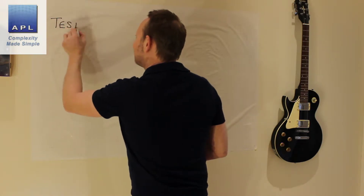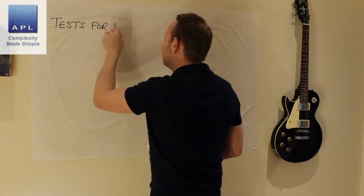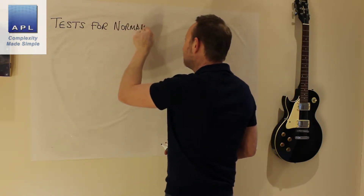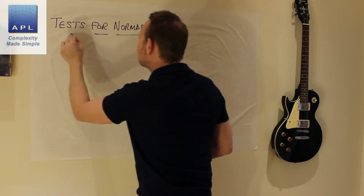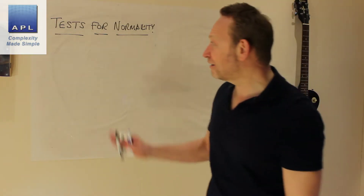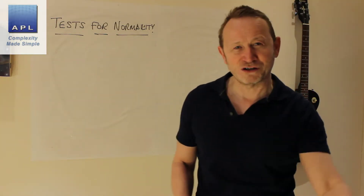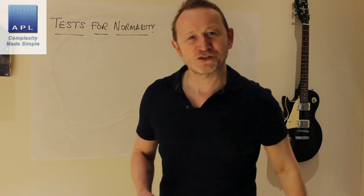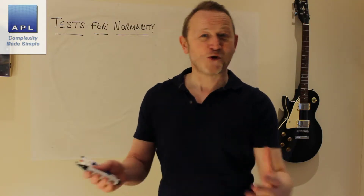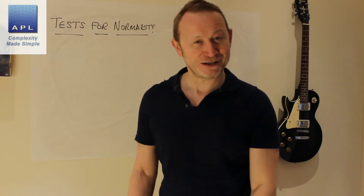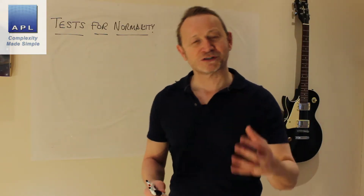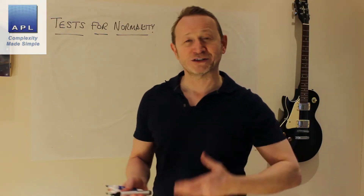I'm going to look at tests for normality. Why are we doing this? Does it matter? Should we use them? Now there are a number of these tests out there: the Anderson-Darling test, the Kolmogorov-Smirnov test, a Pearson chi-squared test. Just quoting them makes you sound like a mathematical genius. But what is this all about? Why do I want a test of normality? Why do I want to know this?